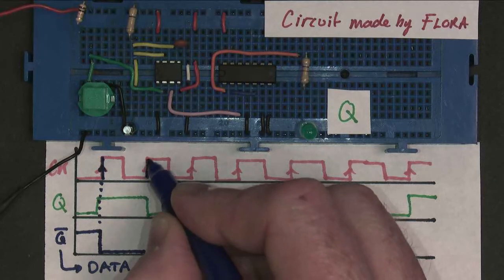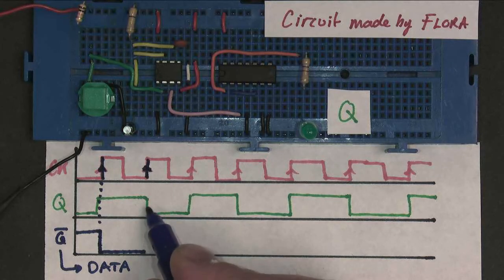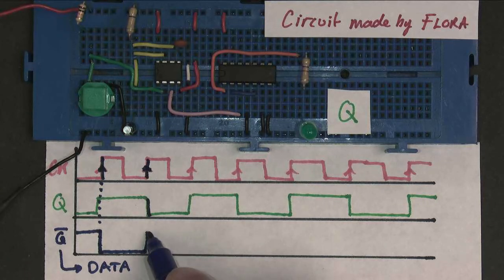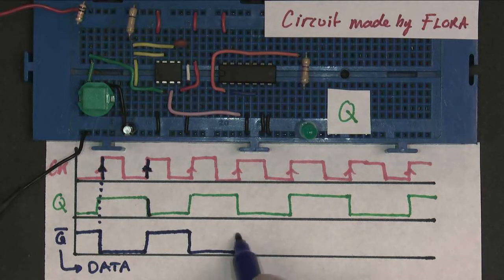So on the next rising edge of the clock, data is 0, because Q-bar is 0, therefore Q becomes 0, and data becomes 1, and Q-bar becomes 1, and so on, and so forth.